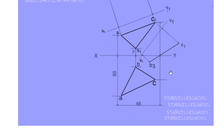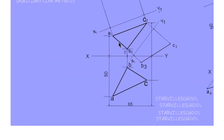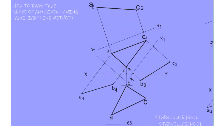For the third side it's exactly the same thing, and I'm sure you can do that by yourself now. Just place a parallel line, take the measurement from B to the XY line and from A to the XY line, and transcribe it onto the perpendicular lines. We've now located the true length of all the sides of this oblique triangle.